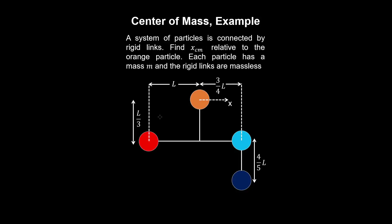A system of particles is connected by rigid links, and we're asked to find the horizontal center of mass relative to the orange particle. Each particle has a mass m and the rigid links are massless.